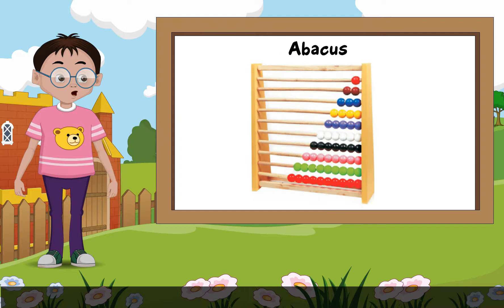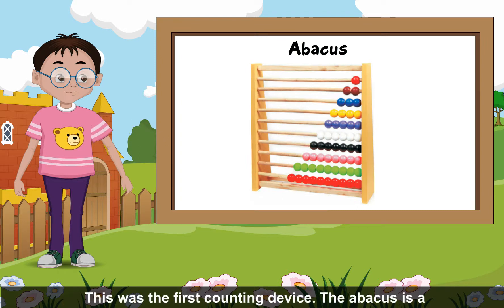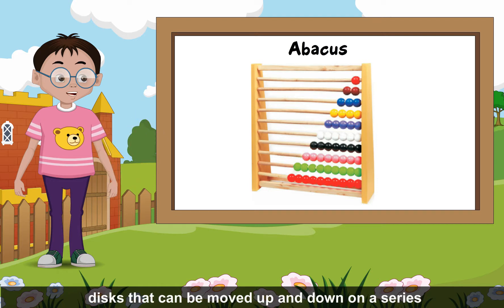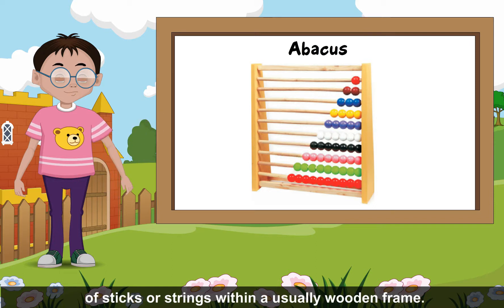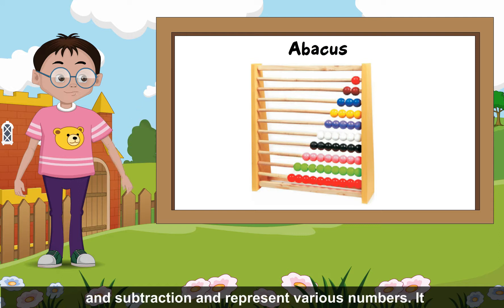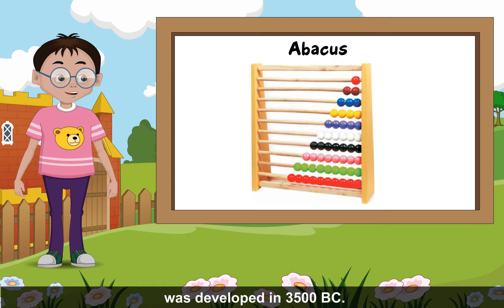Abacus: This was the first counting device. The abacus is a manual aid for calculating that consists of beads or discs that can be moved up and down on a series of sticks or strings within a usually wooden frame. By moving appropriate beads one could do addition and subtraction and represent various numbers. It was developed in 3500 B.C.